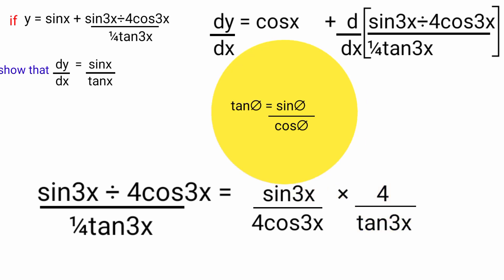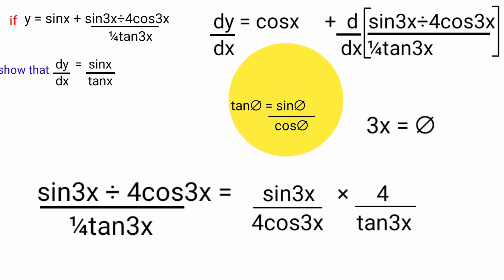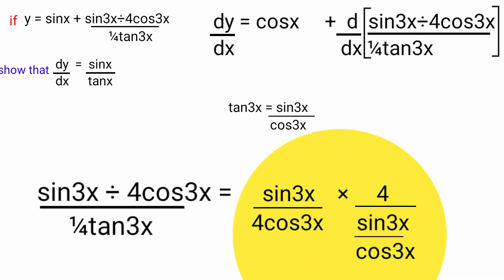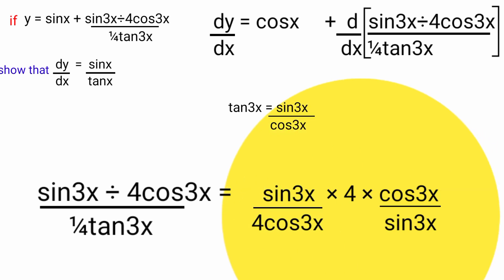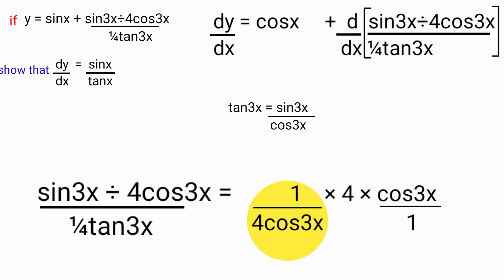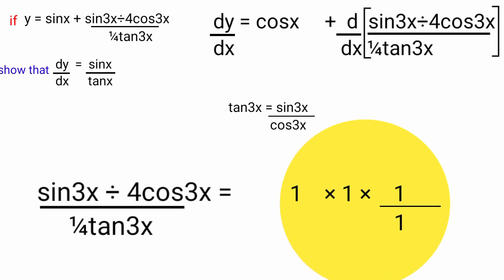Recall in trigonometry that tan θ equals sin θ over cos θ. Letting 3x equal θ, tan 3x equals sin 3x over cos 3x. Substituting, we have sin 3x over 4 cos 3x times 4 over (sin 3x over cos 3x). Changing to multiplication using the reciprocal cos 3x over sin 3x, it becomes sin 3x over 4 cos 3x times 4 times cos 3x over sin 3x. The sin 3x terms cancel, the cos 3x terms cancel, and the 4s cancel, giving 1.